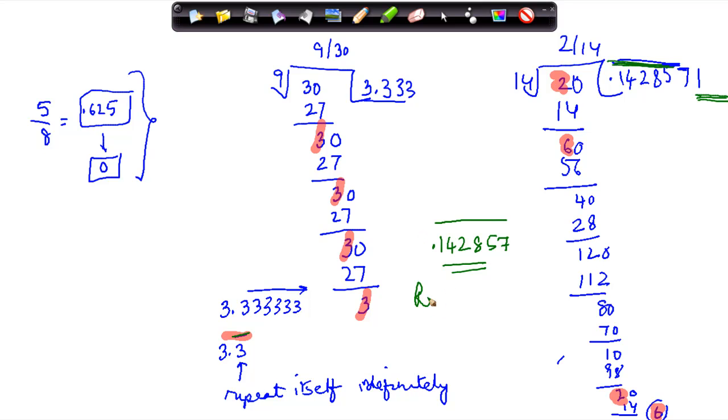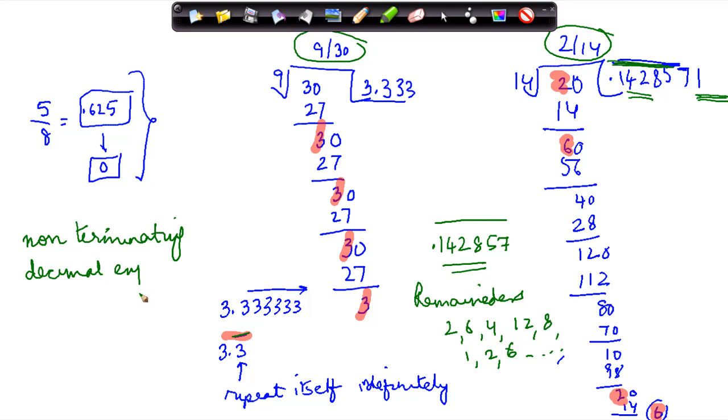So remember, even if you look at the remainders, we see that originally the number was 2, then you had 6, 4, 12, 8, 1, then it again started with 2, 6, and these will keep on repeating. So these kinds of numbers, rational numbers, wherein the quotient has a factor which keeps on repeating itself, are known as non-terminating decimal expansion.